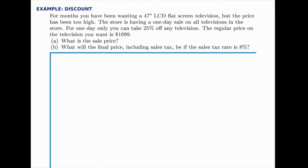So for part A, what we're really looking for is what the price will be once you take 25% off of $1,099. And there are two ways we do this. We could calculate 25% of $1,099 and then subtract that,